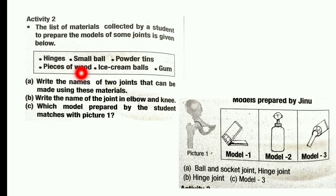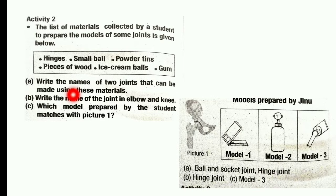The materials are: hinges, small balls, powder tins, pieces of wood, ice cream balls, and gum. We'll arrange these materials. Write the name of two joints that can be made using these materials.